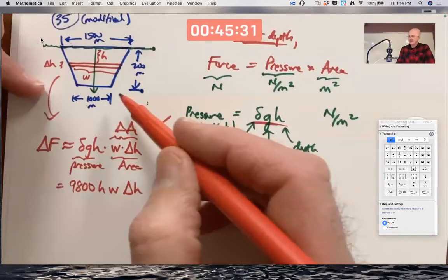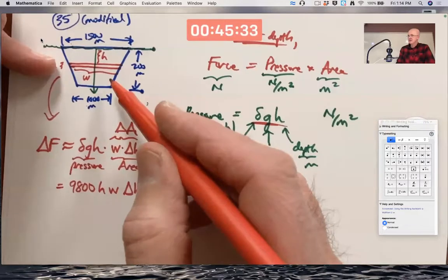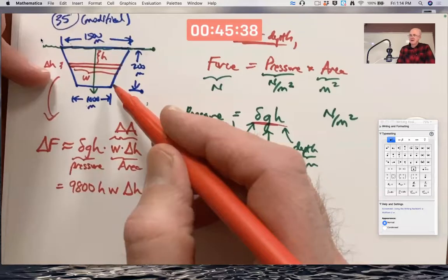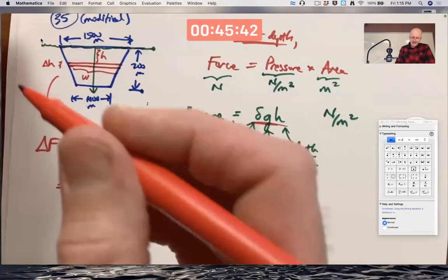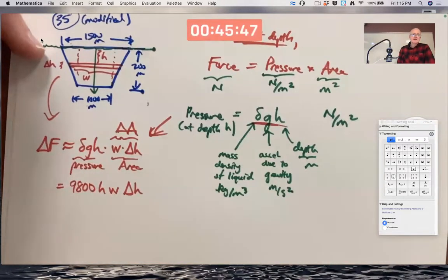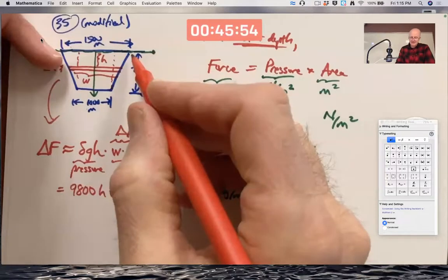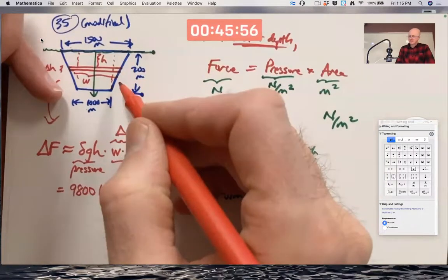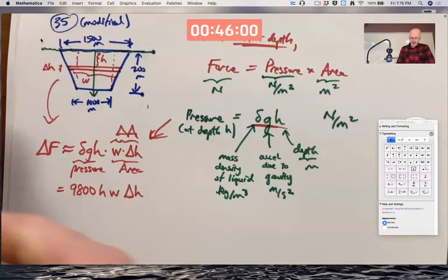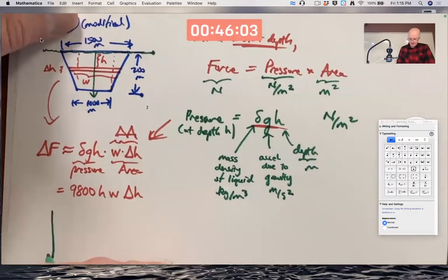If this were a rectangle instead of a trapezoid, W would be constant. But it's a trapezoid, so W is not constant. I could figure out W by drawing some triangles in here and that kind of thing. What's probably a little quicker is to just use the fact that since this is a trapezoid, since these are straight lines here, W is going to be a linear function of H. I could just make the graph of it and use the graph to help me figure out the formula.